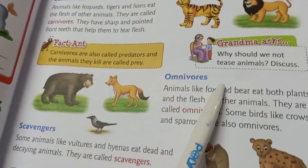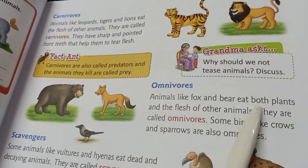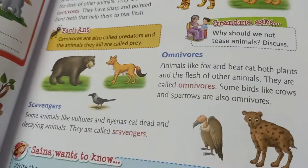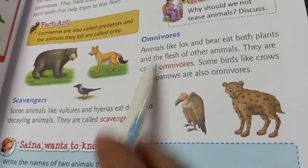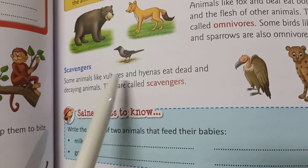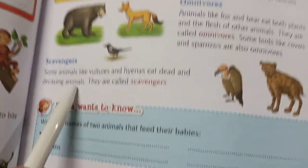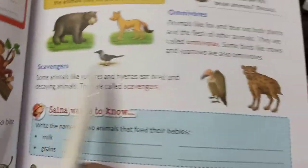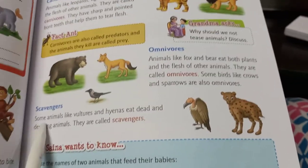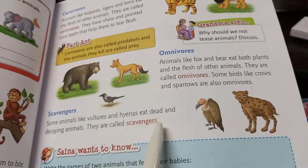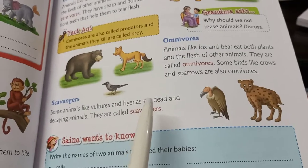The third type is omnivores. Animals like fox and bear eat both plants and the flesh of other animals. Some birds like crows and sparrows are also omnivores. The fourth type is scavengers — animals like vultures and hyenas that eat dead and decaying animals. They are called scavengers.